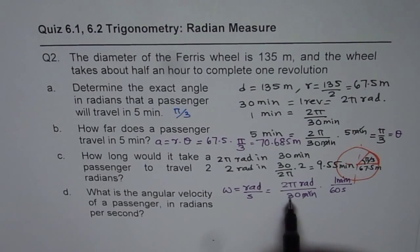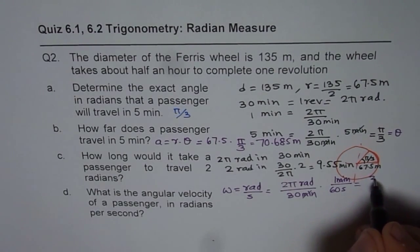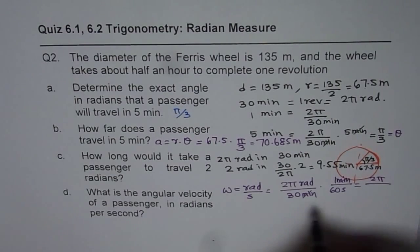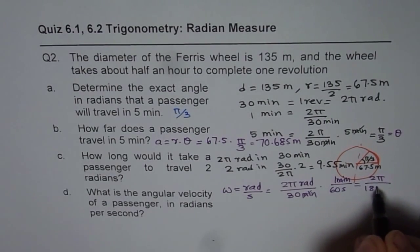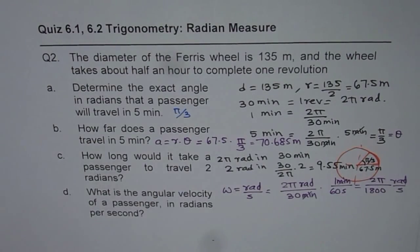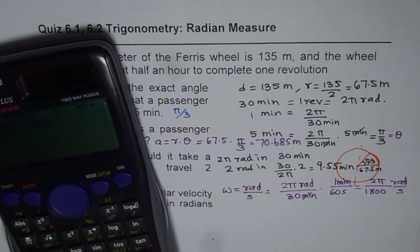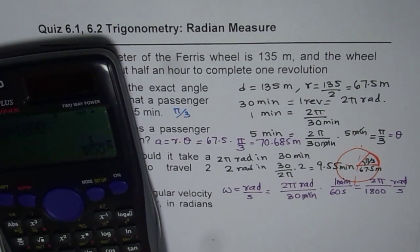So the answer is 2π divided by, let's multiply this, 6 times 3 is 1800. So we get 2π divided by, 6 times 3 is 18 and then 2 zeros radians per second. So let's calculate this answer. 2π, so it is 2 times π divided by 1800.